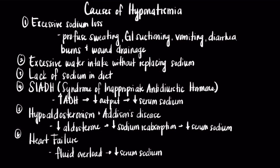Hypoaldosteronism and Addison's disease also lead to hyponatremia. Aldosterone is a hormone released from the adrenal glands that helps in reabsorbing sodium from the kidney. With a lack of this hormone, as in hypoaldosteronism and Addison's disease, there is a decreased reabsorption of sodium, thus leading to low sodium levels in the body.